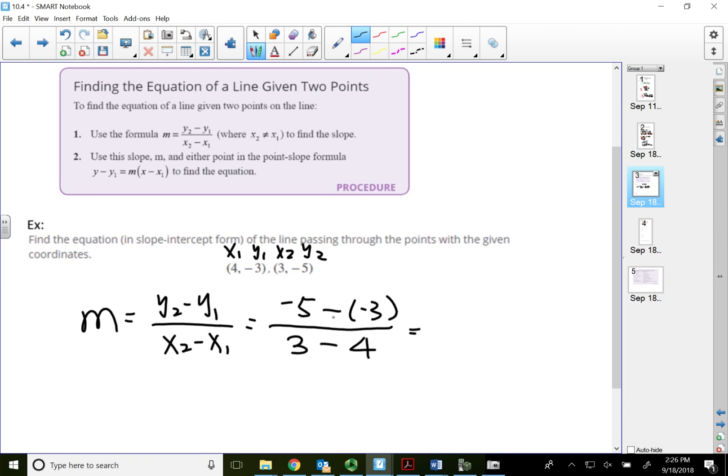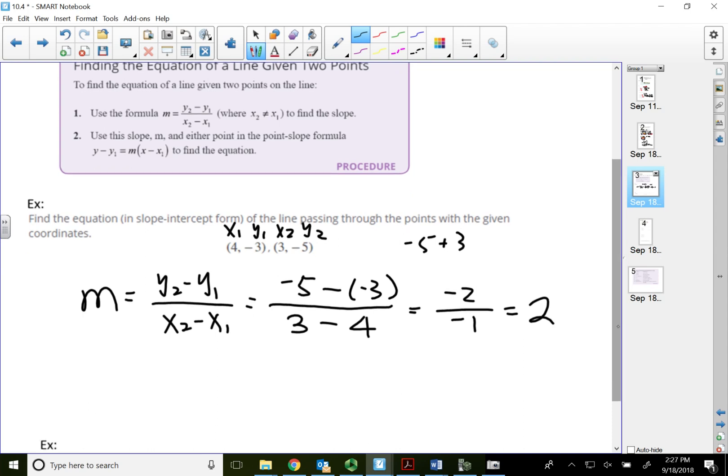So this second term, negative 1 times negative 3 become positive 3. So negative 5 plus 3 is going to be negative 2 over 3 minus 4 is negative 1. So negative 2 over negative 1 become positive 2. So you always got to simplify for your fraction. So my slope is 2.